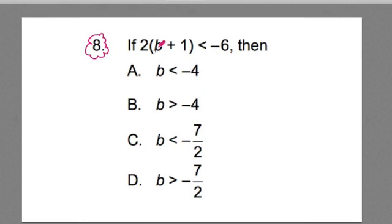Let's start. It says if 2 times the quantity b plus 1, and then it has this symbol less than negative 6, then, and it has these answer choices and all of them lead with the letter b. What the heck does that mean?